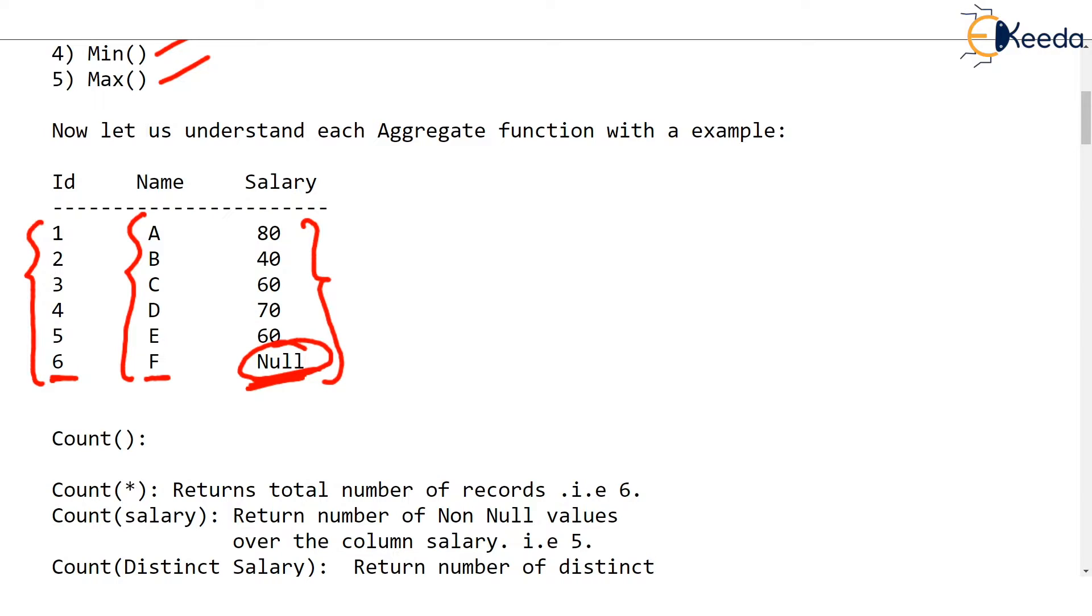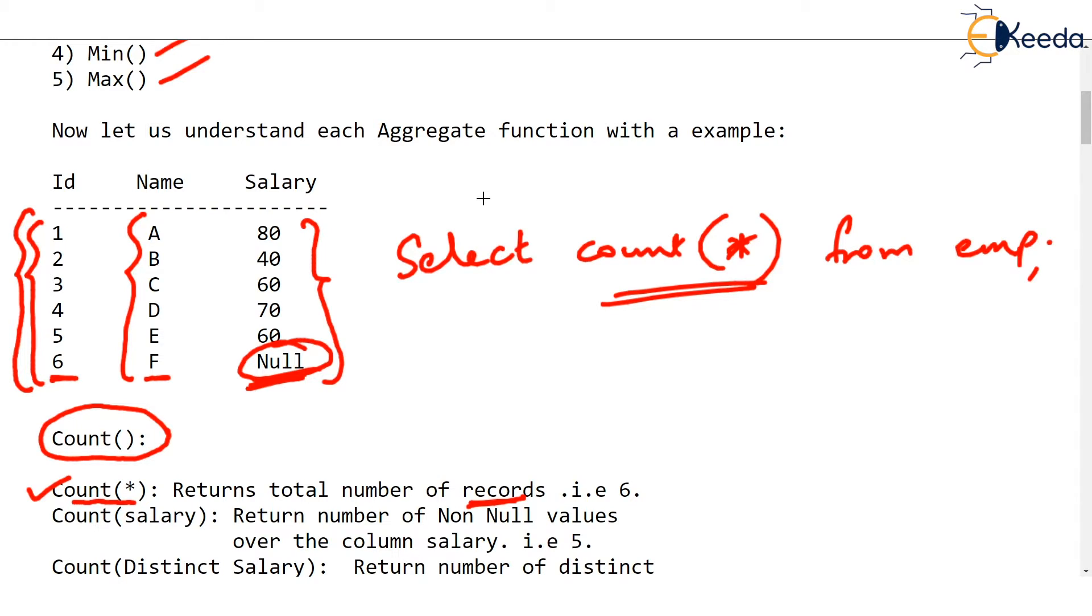For example, the first function is Count. This will simply return the number of records. If you write count star, this will return the number of records, that is rows of the table. Number of rows are 6. How do you use count star? You use select statement. Select count star from, let's say the table name is emp. This becomes your query. Then, this is going to print simply one output, that is 6.